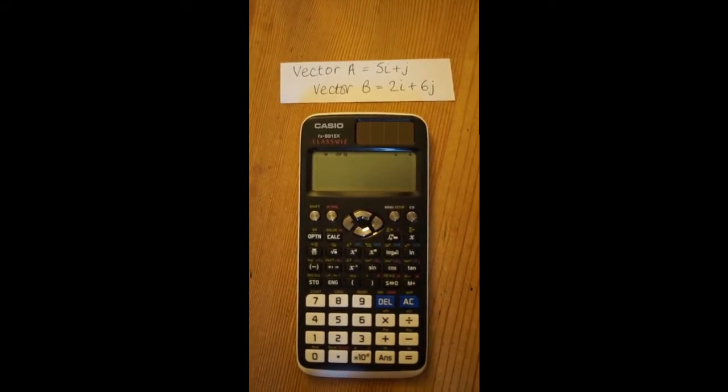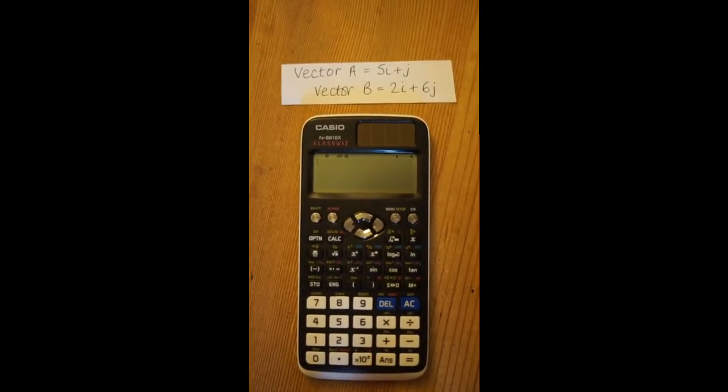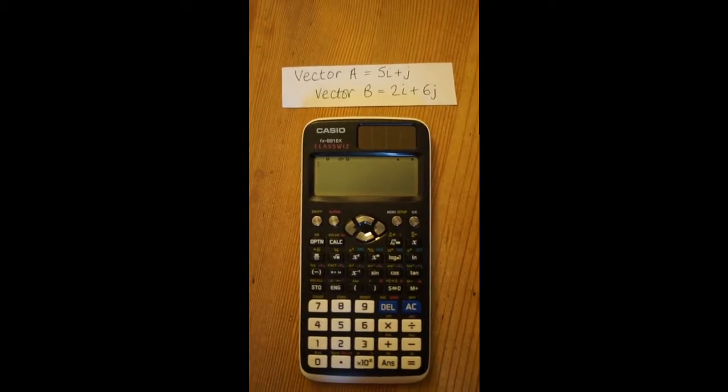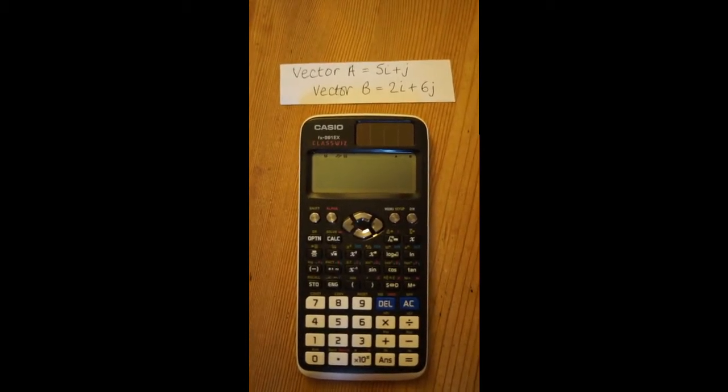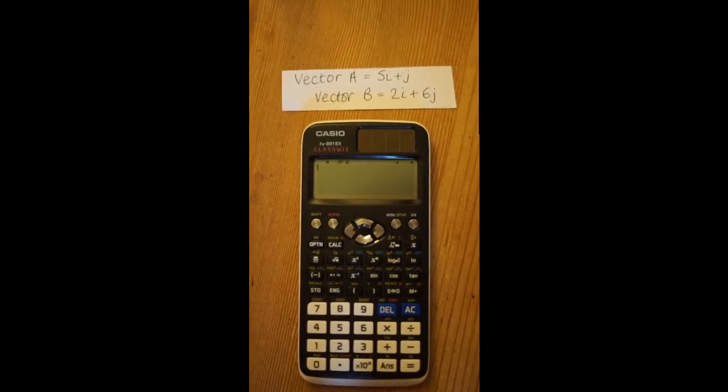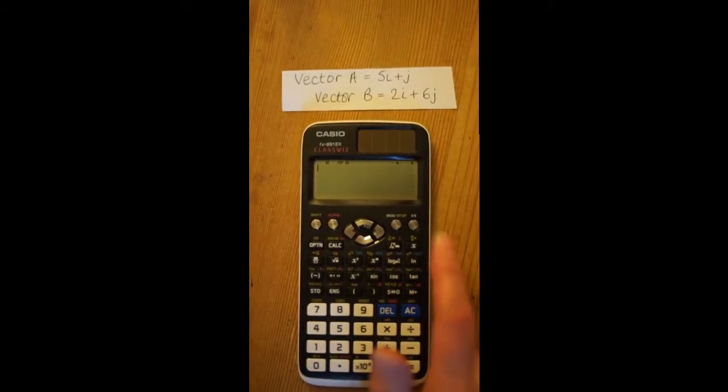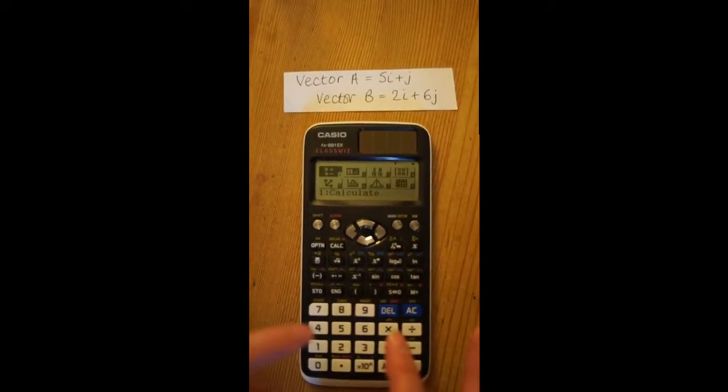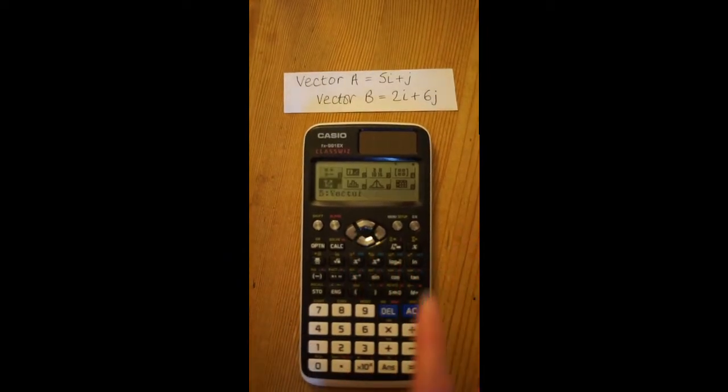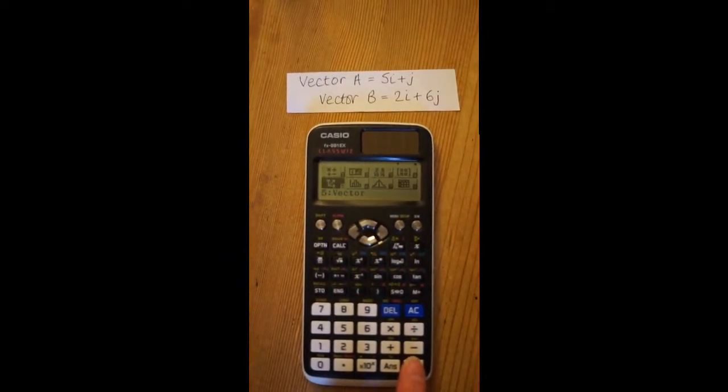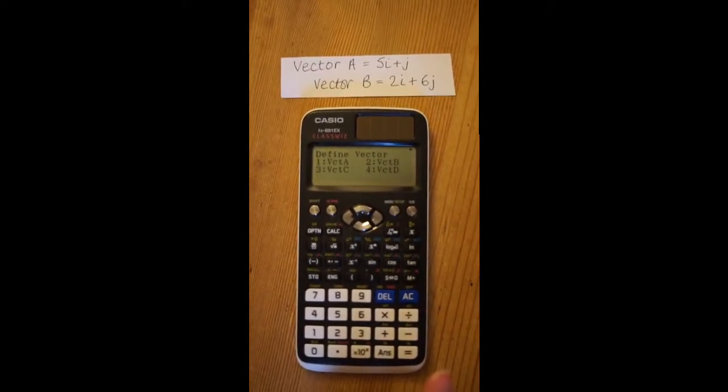Here's how to find the angle between two vectors using this Casio calculator. First, make sure you're in degree mode if you want your answer in degrees and press menu. Scroll down to option 5 and press equals to choose this vector mode.